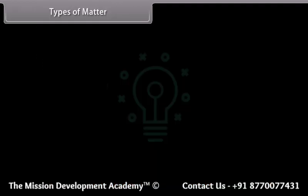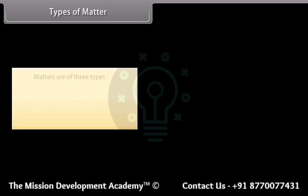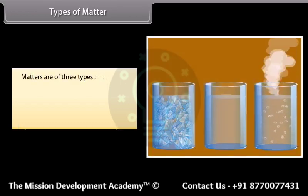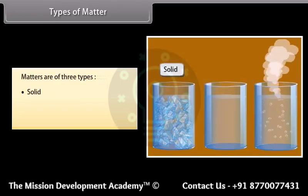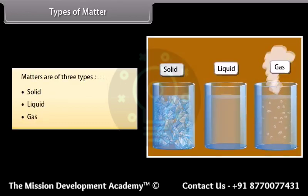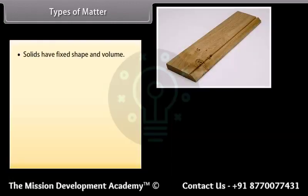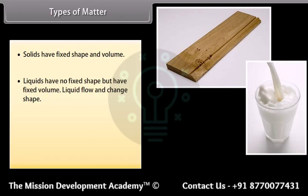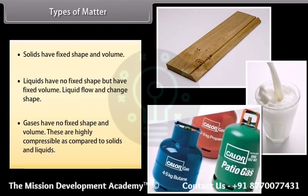Matters are of three types: solid, liquid, and gas. Solids have fixed shape and volume. Liquids have no fixed shape but have fixed volume — liquids flow and change shape. Gases have no fixed shape and volume, and are highly compressible as compared to solids and liquids.